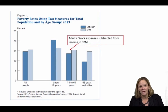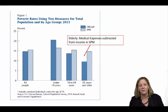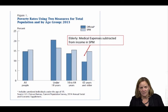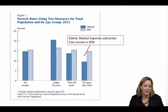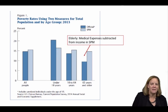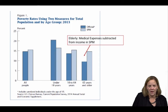Finally, poverty rates among the elderly are also substantially higher using the SPM than using the Official Measure. One of the main differences here is the subtraction of out-of-pocket medical expenses. Because the elderly tend to have more health-related spending, subtracting these expenditures from the income measure raises the estimated poverty rate among those over age 65.